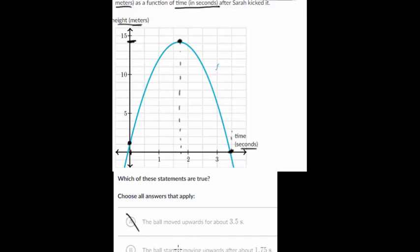And this one says the ball started moving upwards after about 1.75 seconds. So that's the opposite of what happened. After 1.75 seconds, it starts moving downward. So that upwards is not right. And if you want to correct the first one, this is really 1.75 seconds there. And then this one would be down or downwards after about 1.75 seconds. So that one's not right either.